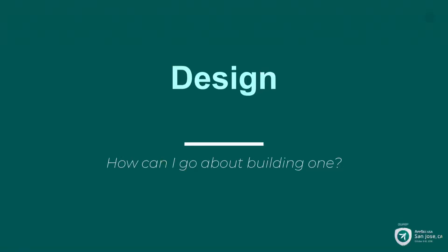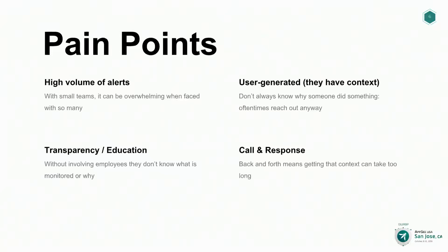So how does a security bot solve all these problems? From the call-and-response side, cutting that round-trip time in half by having a bot that's always there to respond to users. From the education side, we're alerting users specifically on what actions we consider sensitive, and the information is provided to them in this application so they know what we consider risks. In terms of high volume of alerts, these are solved by surfacing the alerts directly to users, because they have the most context — they know what events they performed in their day-to-day jobs and whether that action was done by them.